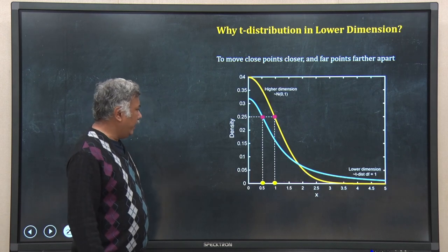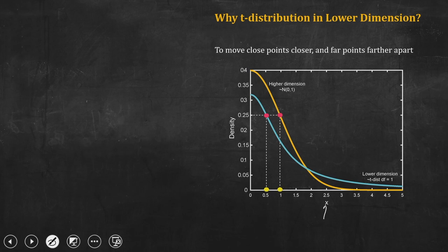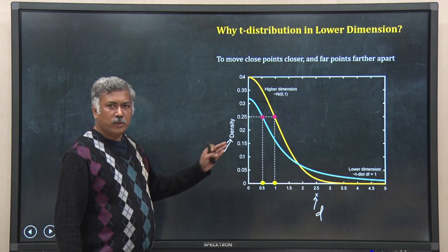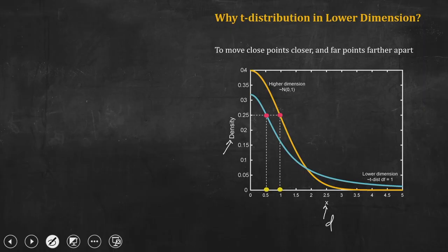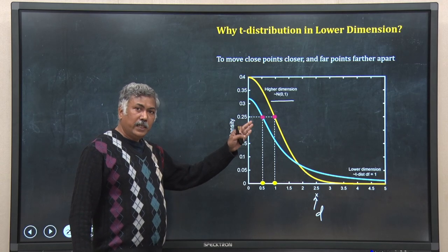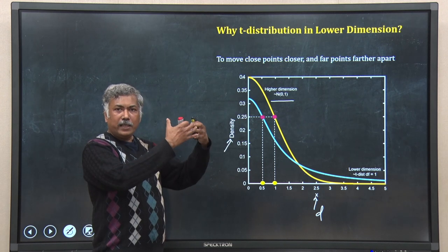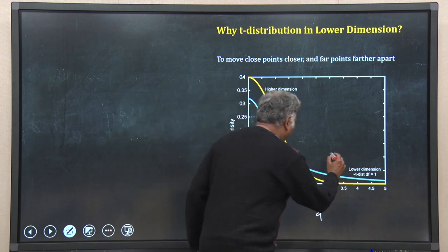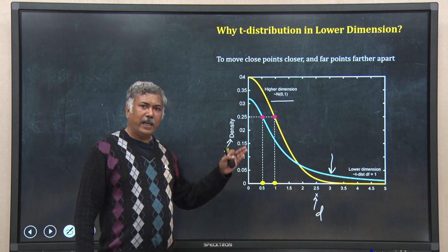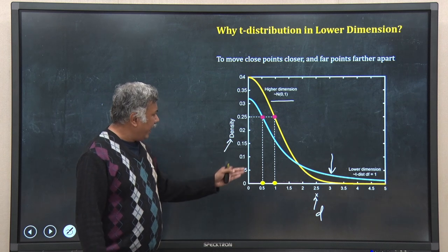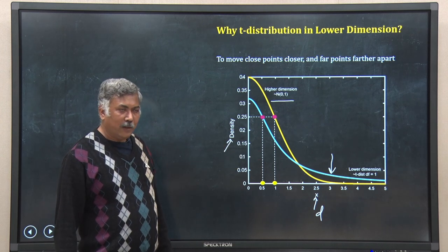This is nicely achieved using T-distribution. What I have shown here: on the x-axis is distance or dissimilarity, and on the y-axis is density or probability. There are two distributions shown — both as half-curves since we do not take negative distances. The yellow curve is a normal distribution with mean 0 and variance 1, used for the higher-dimensional calculation. The blue curve is a T-distribution with degree of freedom 1, used for the lower dimension.